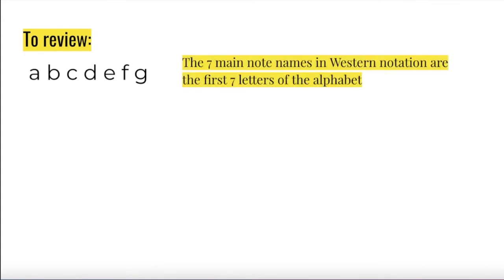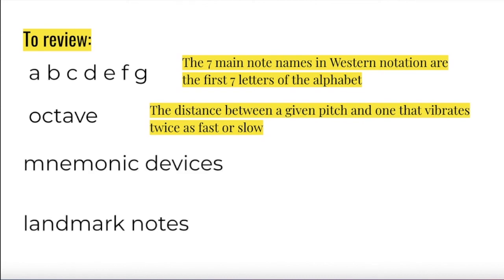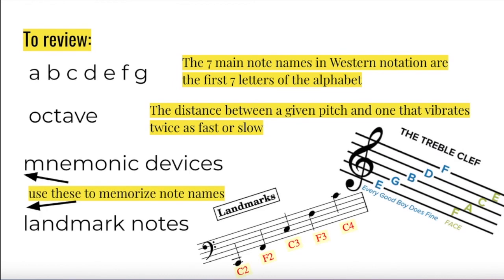To review, A, B, C, D, E, F, and G are the seven main note names in western notation. An octave is the distance between a given pitch and one that vibrates twice as fast or slow. Notes an octave apart have the same letter names. Mnemonic devices and landmark notes are what we need to use to memorize note names.